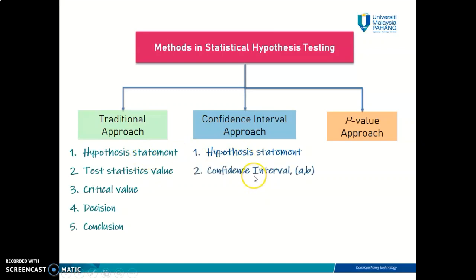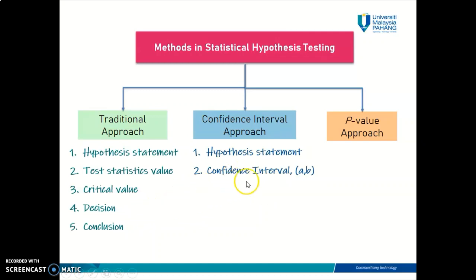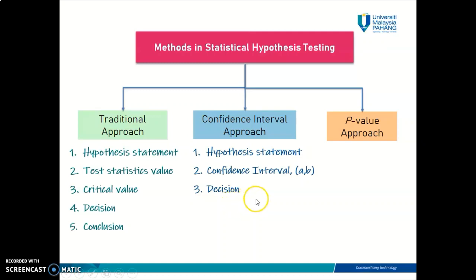The second step is to find the confidence interval which is appropriate or relevant to your claim. This confidence interval in step two is the exact same confidence interval that you learned in chapter two — this is where you get to apply what you learned in chapter two in hypothesis testing. The third step here is different from the traditional approach — you no longer need to establish any critical value. In the confidence interval approach, you can straight away make your decision. It's the same decision as in the traditional approach, whether to reject H-null or to do not reject H-null, but the rules will be a bit different.